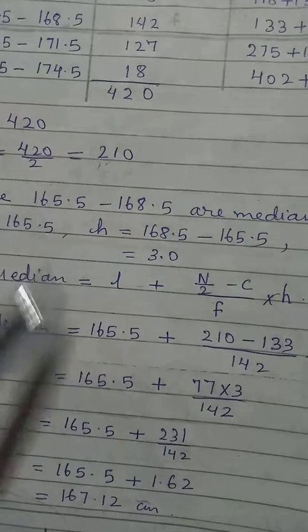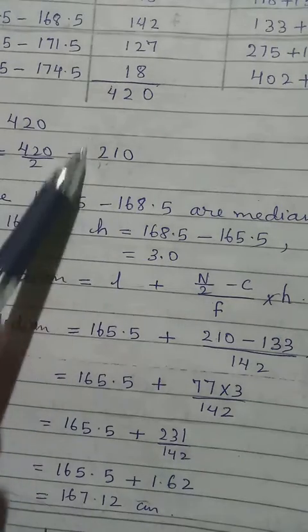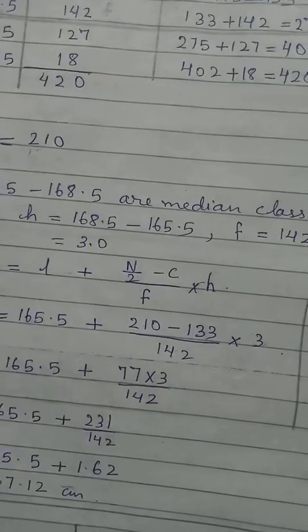So L we already have from here, 165.5. N by 2, we finish to divide. So we can write directly 210. C, we get 133. F 142.